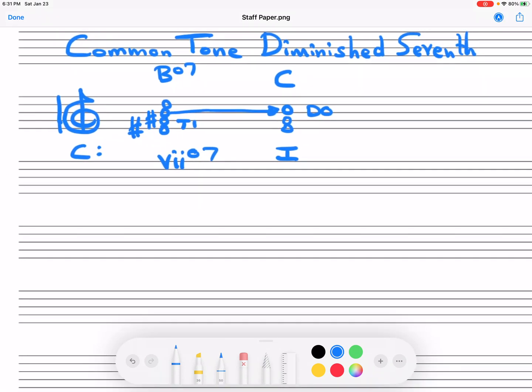So it's that half-step motion from T to Do and the fully diminished seventh quality going to the tonic chord that makes it a seven going to one. Now, for the common tone diminished seventh chord, there is, as you might expect, a common tone.